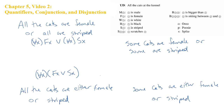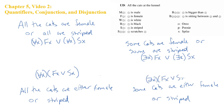Let's get all four of these out. Some cats are female or some cats are striped, which gives us two existentials: some x Fx or some x Sx. And then down here we'll have a single existential: some x, Fx or Sx.